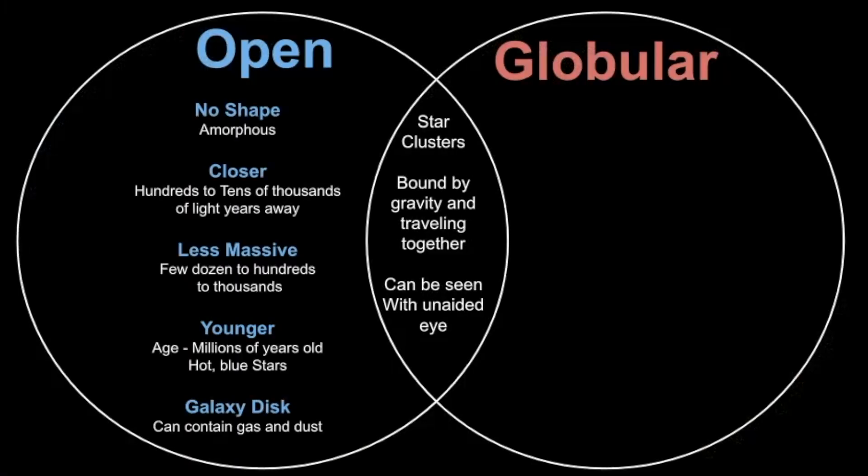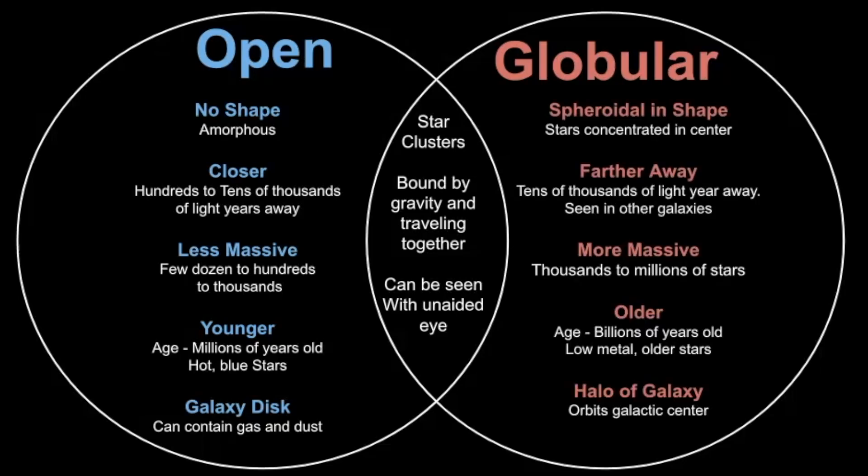But in terms of their differences, there's a lot of them. Open star clusters have no shape. They're typically closer to us. They're less massive. They're younger in age, on the order of millions of years with these hot blue stars. And they are located in the disk of the galaxy. And they typically have gas and dust within the open star clusters. But globular star clusters, their shape is different. They're spheroidal in shape. Stars are concentrated towards the middle of that shape. And they're tens of thousands of light years away. And we can actually see these in other galaxies, which is really amazing. So we're able to study the motion and the number of globular clusters around other galaxies. Globular clusters are more massive, from thousands to millions of stars. They're older, and they also are located around the halo of the galaxy as it goes around the galactic center.